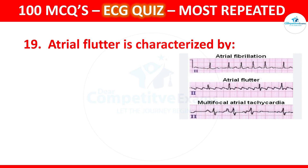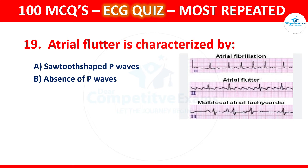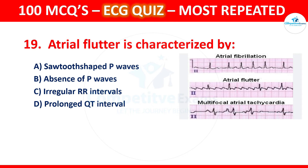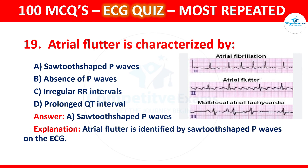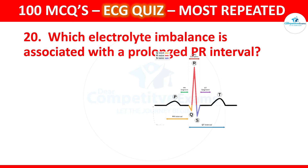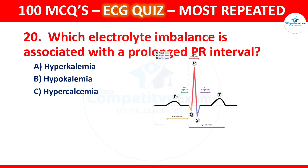Question 19: Atrial flutter is characterized by which of the following? Options are sawtooth-shaped P waves, absence of P waves, irregular RR intervals, or prolonged QT interval. The correct answer is sawtooth-shaped P waves. Atrial flutter is identified by sawtooth-shaped P waves on the ECG.